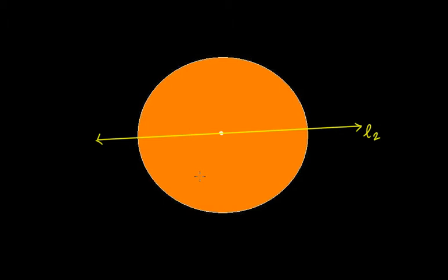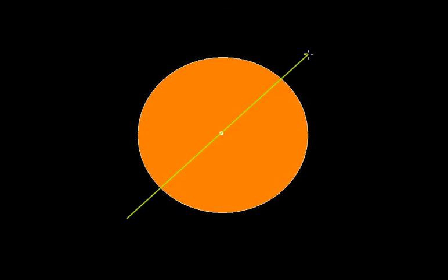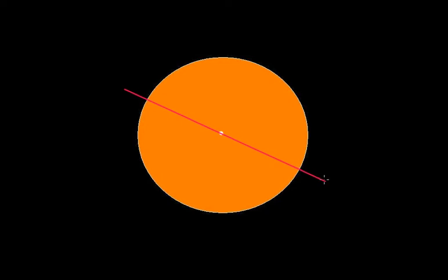If someone asks whether there is yet another possibility, you will say yes. This is one more possibility — this line is again passing through the center and even this will act as a line of symmetry, again giving two equal halves that are mirror images of each other. Similarly, even this will be a line of symmetry passing from the center, that is L4.